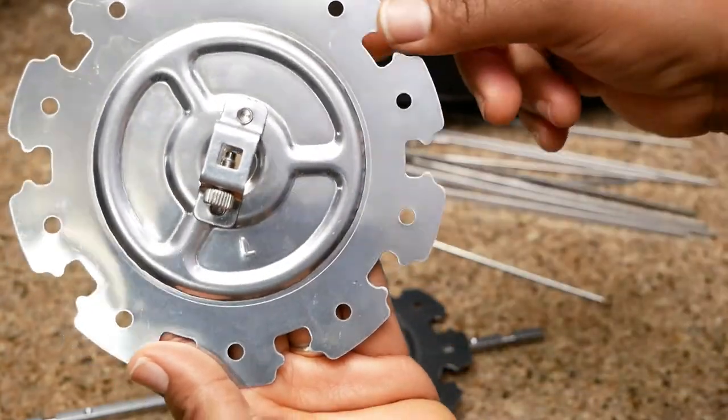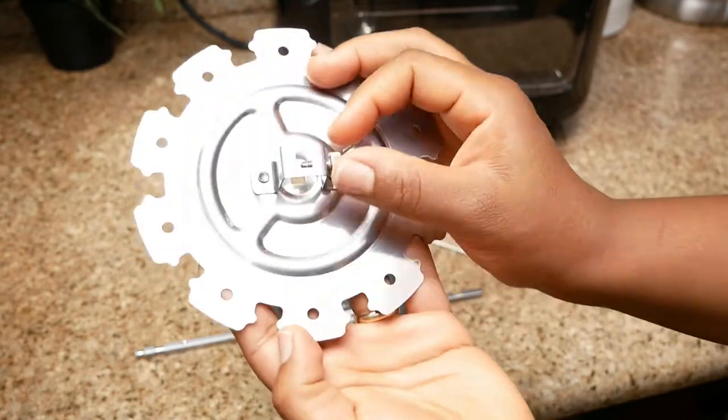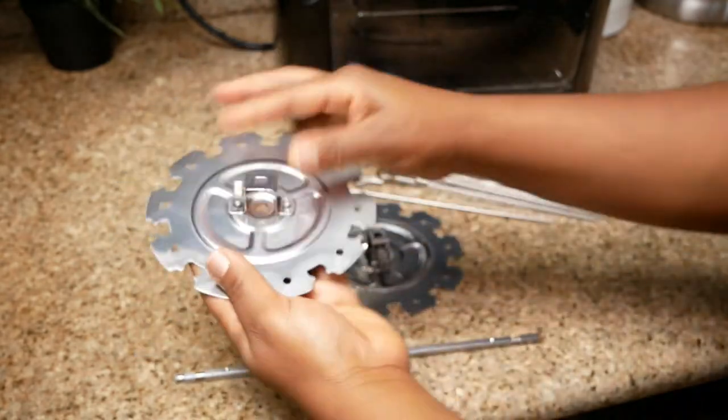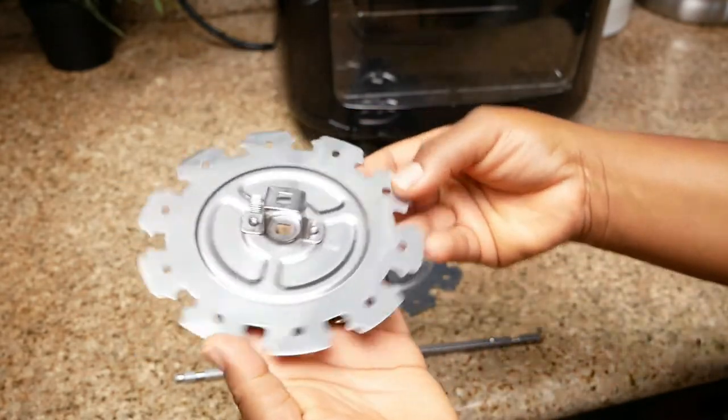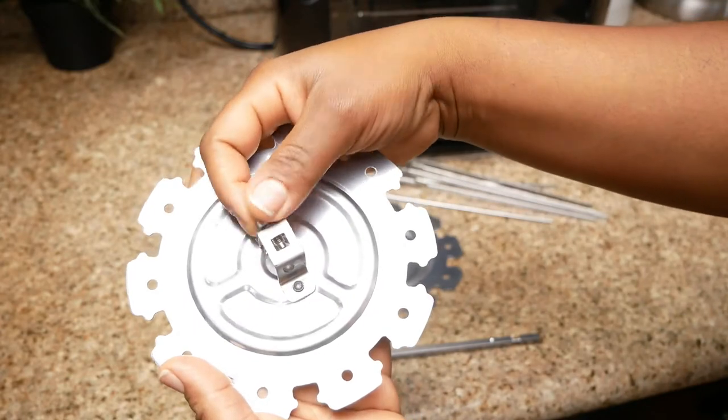So first you want to unscrew the screw like you see here, and we're going to insert the shaft through both of the skewer racks.